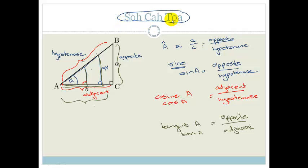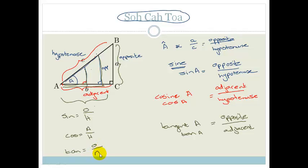So where does SOHCAHTOA come from? Well, SOHCAHTOA is: Sin equals opposite over hypotenuse. Cos equals adjacent over hypotenuse. And tan is equal to opposite over adjacent. Sin opposite over hypotenuse, cos adjacent over hypotenuse, tan opposite over adjacent. Grade 10s, this year is super important — you are going to be using this all the way through to grade 12. I would suggest that the very first thing you do when working on trigonometry is to write SOHCAHTOA on the top of your page.